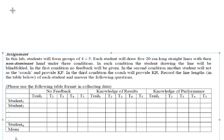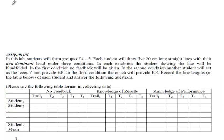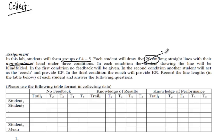In this part of the lecture video I'm going to show you how you should collect the data. You'll have to form groups of four to five people where each student will draw five lines with their non-dominant hand. I've decided to modify the line length from 20 centimeters to 100 centimeters, and the five trials under three different conditions becomes 15 trials total.